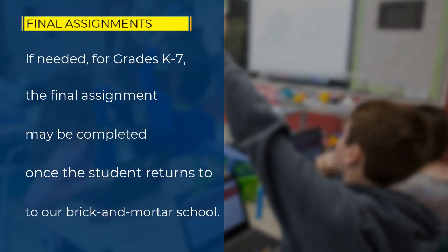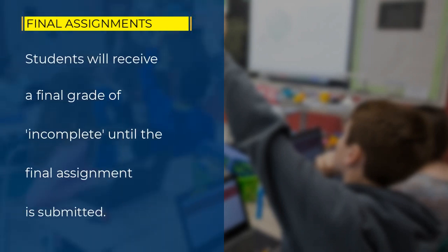Final assignments are all due on June 12th unless your module instructors indicate otherwise. Grades K-7 may complete the final assignment once the student returns to brick-and-mortar school. Students will receive a final grade of incomplete until the final assignment is submitted.